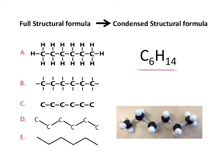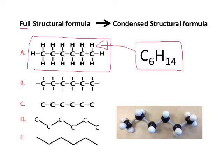Here's a molecular formula, C6H14, and you can turn that into a very simple structural, or what we're going to call a full structural formula over here. You can see the six carbons and the 14 hydrogens. Ultimately, what I want to do is translate this full structural formula into what's called a condensed structural formula, which is much easier to draw.